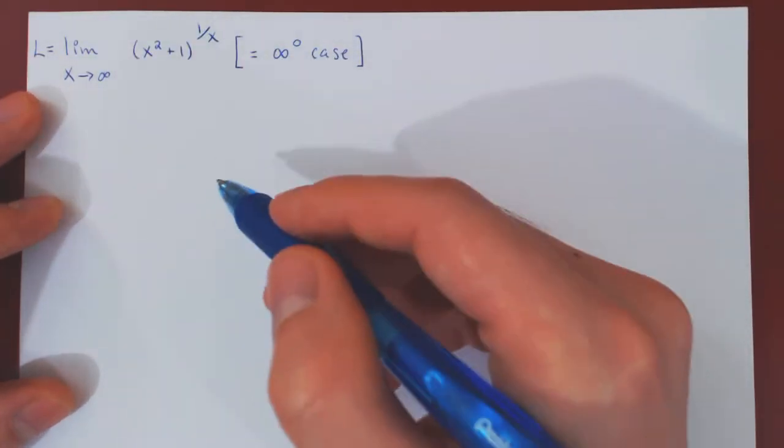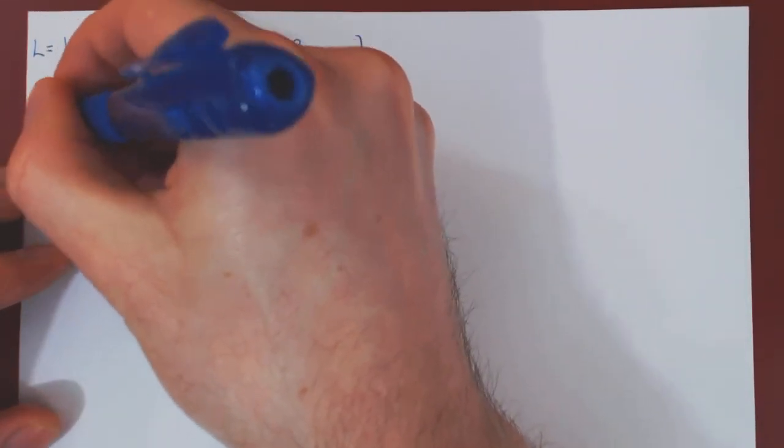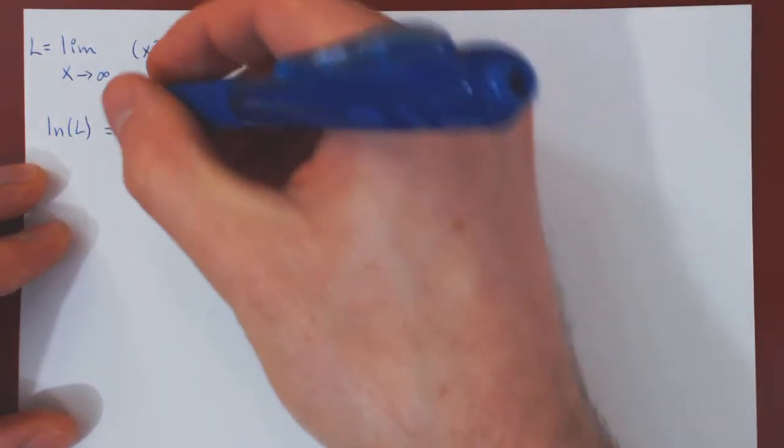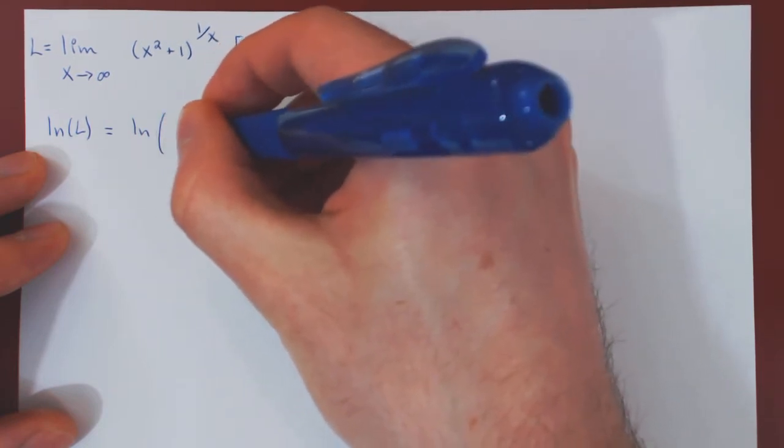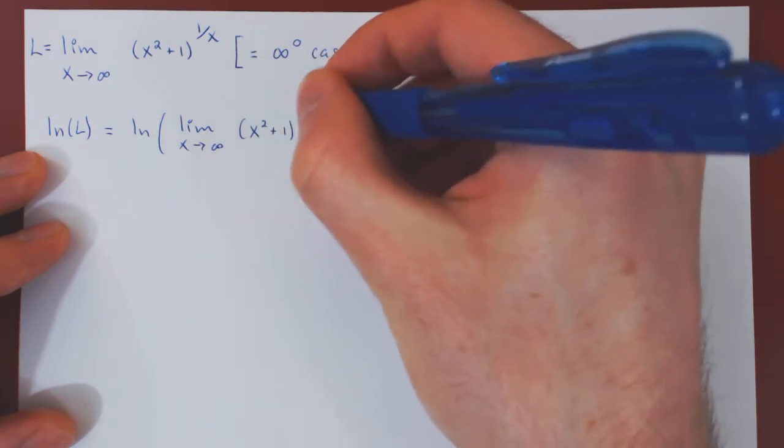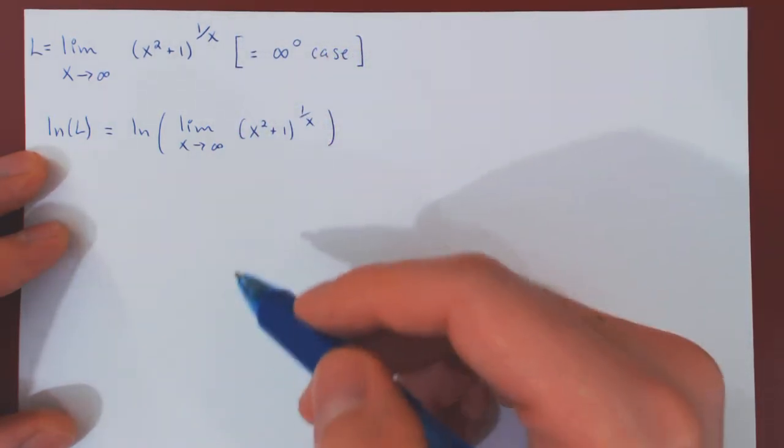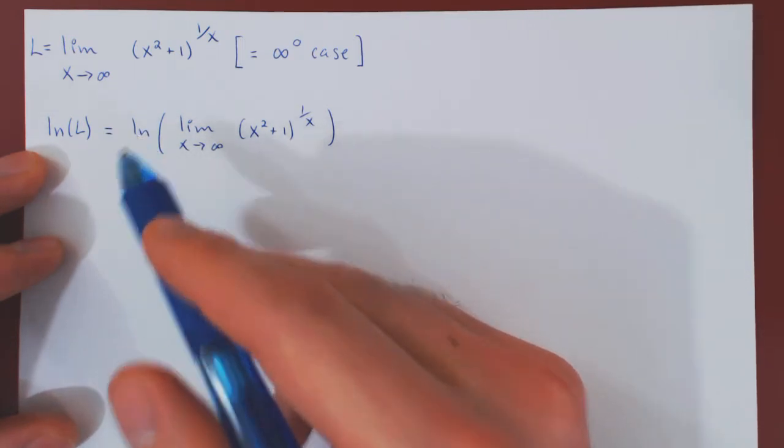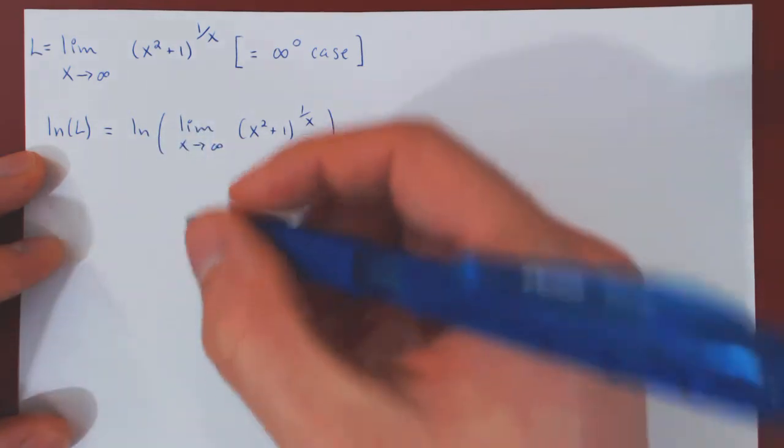But we know we can tackle such cases using first the ln. So we have the ln of the limit. And again because we have a positive function, and ln is continuous on the positive real axis, by continuity we can interchange the ln and the limit.